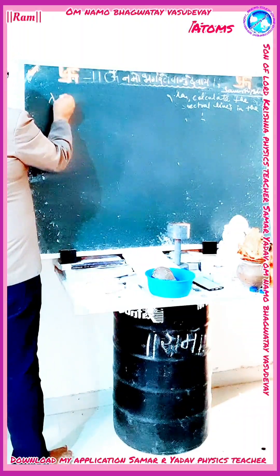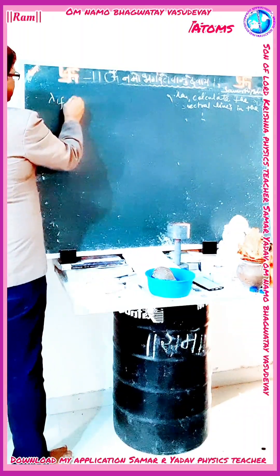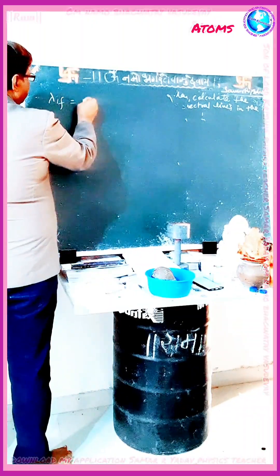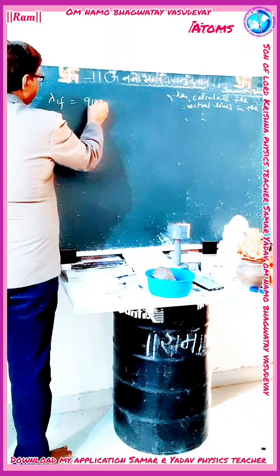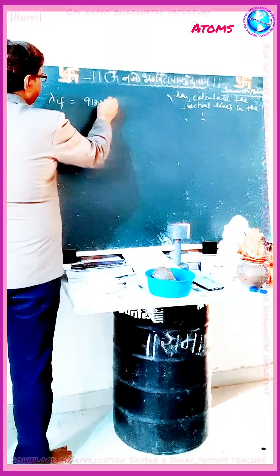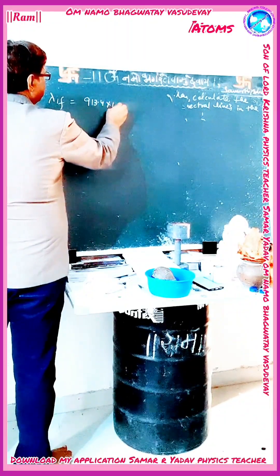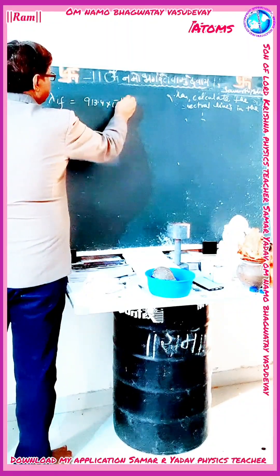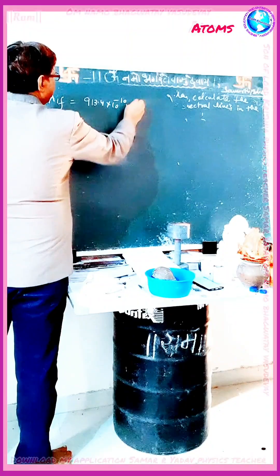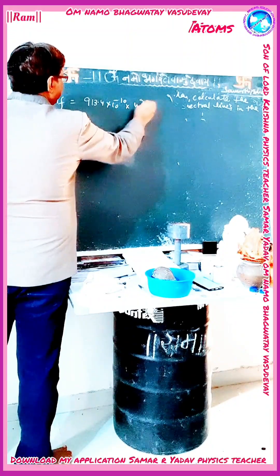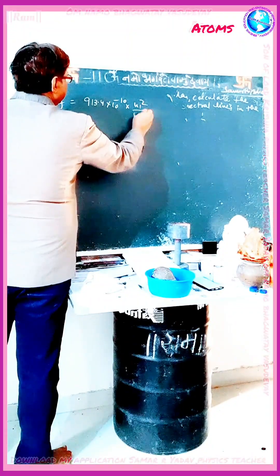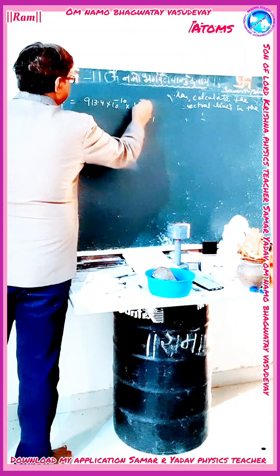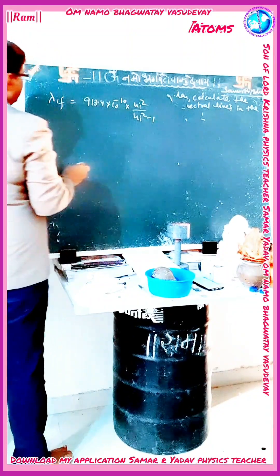Solving this, λ_if is equal to 913.4 × 10⁻¹⁰ into n_i² upon (n_i² minus 1).